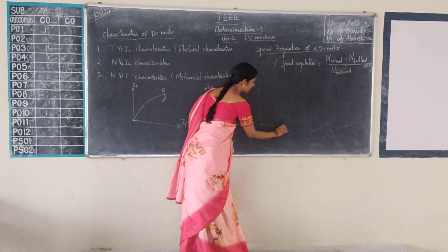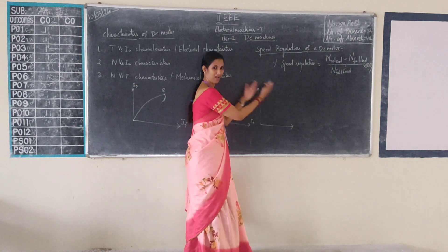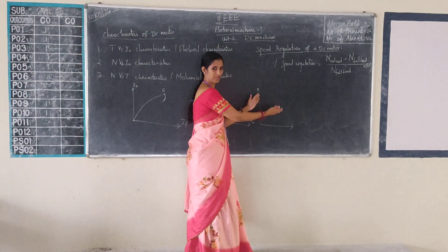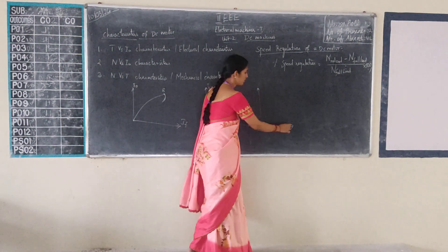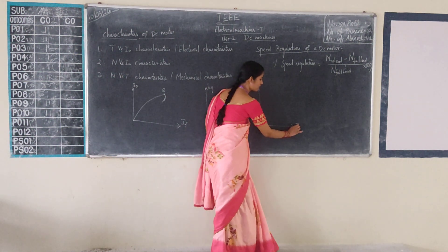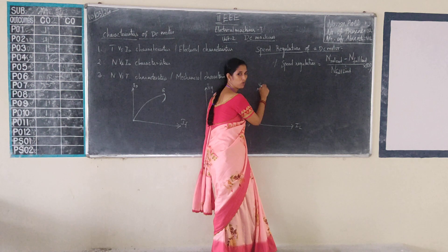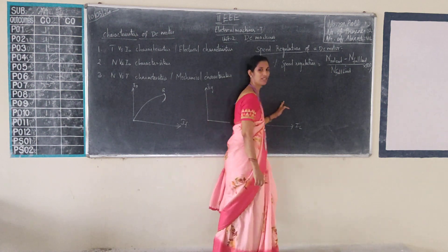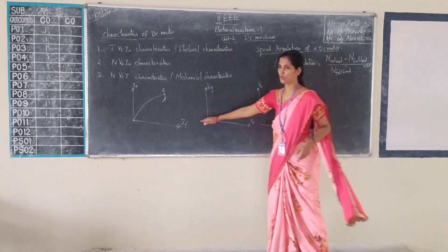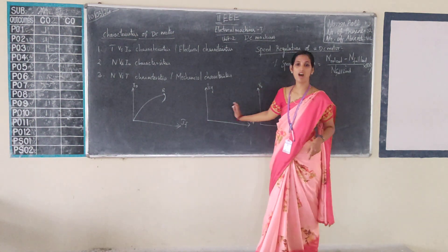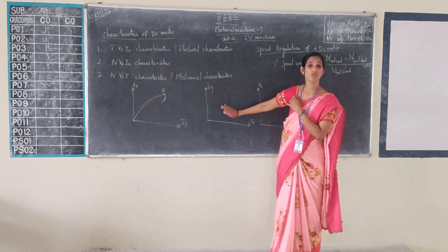External characteristics: external means load current versus the terminal voltage — that is the internal relationship. So external means load current versus the terminal voltage. This is the external characteristics. These are the characteristics of the DC generators.